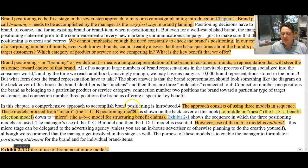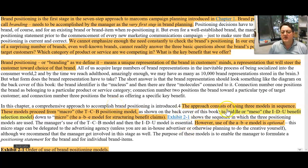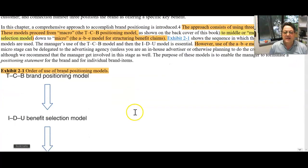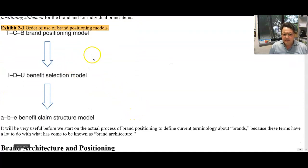It's a comprehensive approach to accomplish brand positioning. Now, there are three models in sequence. We're going to use two: the TCB positioning model and the middle model, the IDU benefit model. Let's just have a look at it and see what the idea is.